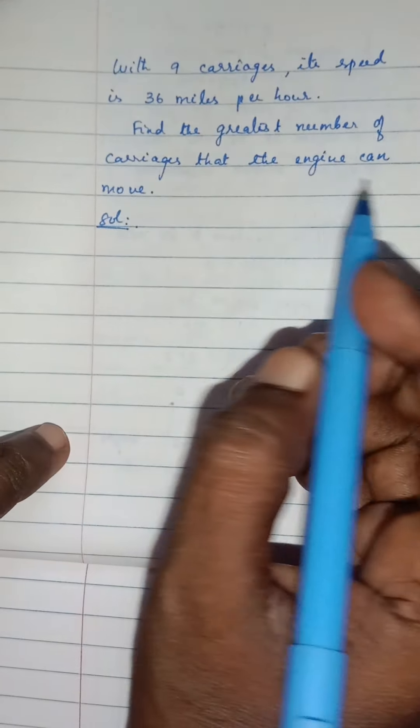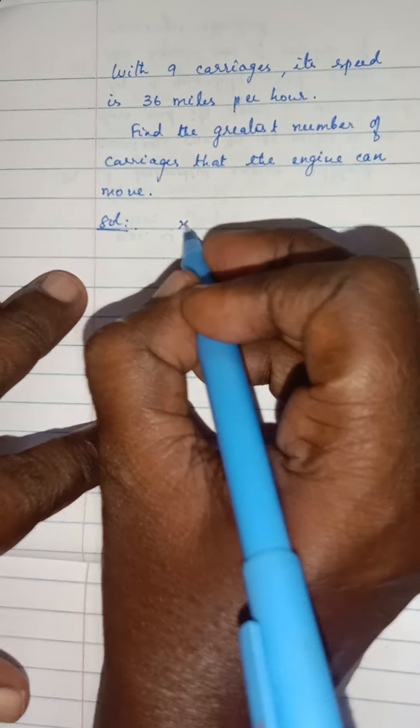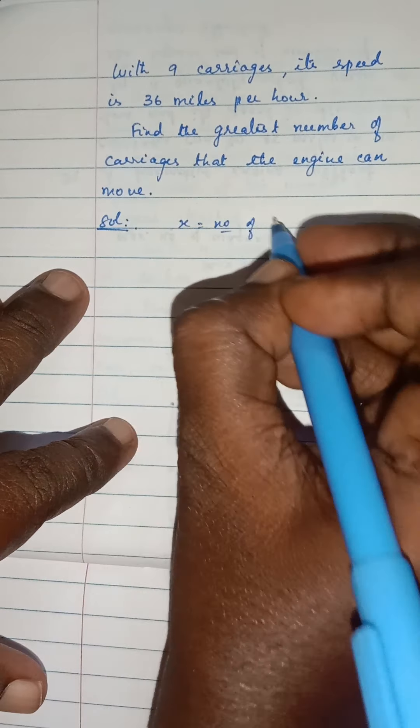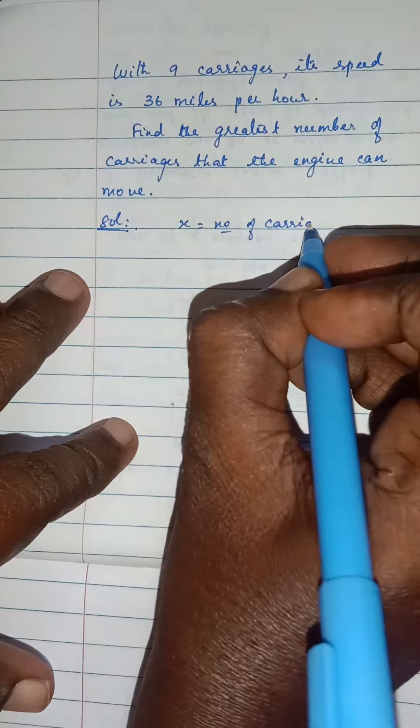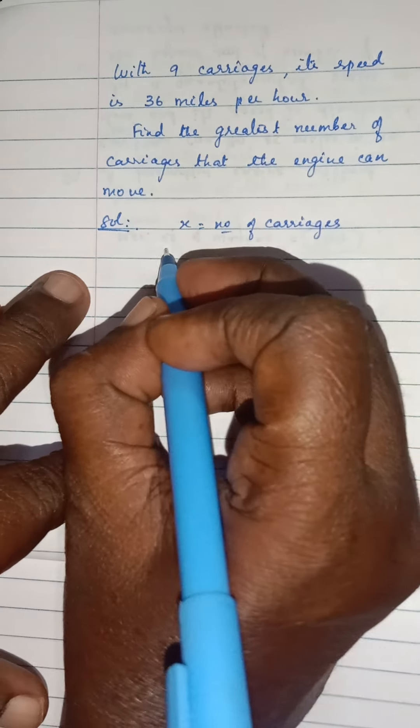Find the greatest number of carriages that the engine can move. That means x is the number of carriages. That means speed is S.